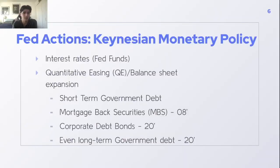Fed policy today can be categorized as Keynesian, as it's generally enacted to stabilize the economy during a recession. The two main tools the Fed uses are the interest rate — the Fed funds rate — and quantitative easing, or QE, also known as balance sheet expansion. The Fed funds rate is the overnight lending rate, and it sets essentially all other rates in the economy, from bank prime to personal loan rates to credit cards.